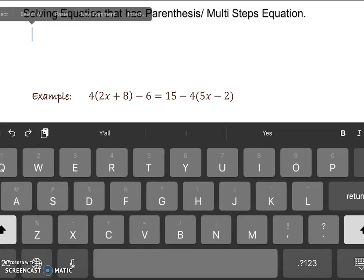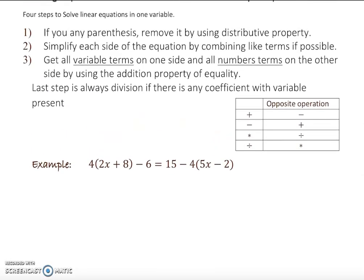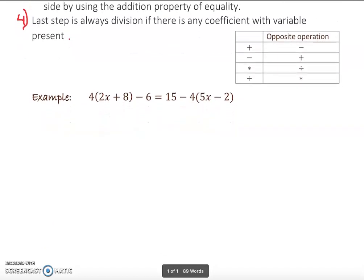Okay, so basically this is what I mean. As you see, if you have a parenthesis, remove it by using distributive property. Simplify each side of the equation by combining like terms if possible. Get all the variable terms on one side and all the number terms on the other side by using the addition property of equality. And this number four, which is the last step, is always division if there is any coefficient of the variable present. And of course, those are opposite operations.